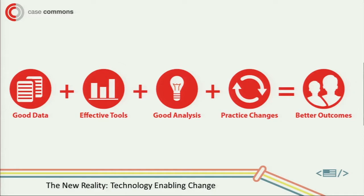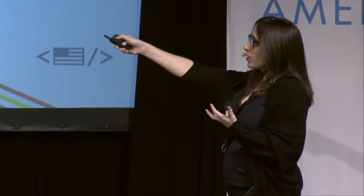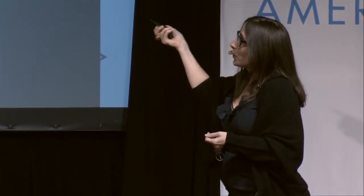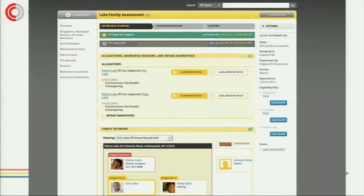This also means better data in. A lot of what I hear is about analyzing data, and data analysis is really important — but we have to make sure the data coming in is good. In child welfare, most of the time you can't trust it. We believe good data and effective tools lead to better change for kids and families. That's led us to implement in Indiana, where we just replaced their legacy system in 18 months, launched to 3,500 users as a Ruby on Rails web application.